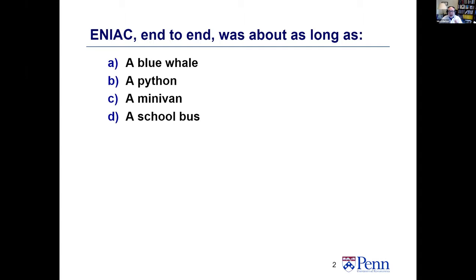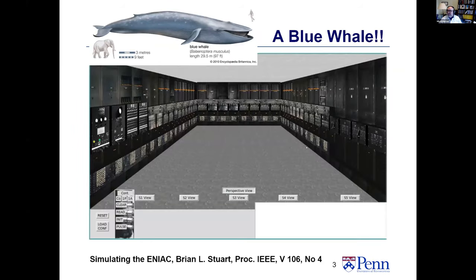The first question is: how big was ENIAC? End to end, if you put all the 40 panels next to each other, was ENIAC about as long as a blue whale, a python, a minivan, or a school bus? The answer is a blue whale. This is a simulation picture done by Brian Stewart — there's a reference at the bottom of the slide. You can park a school bus in it, but wrap it around and you get a blue whale.